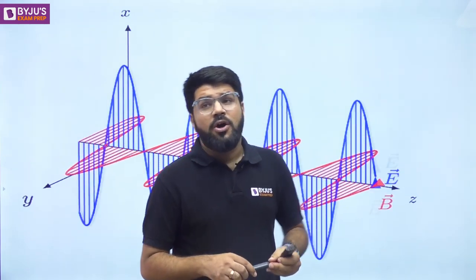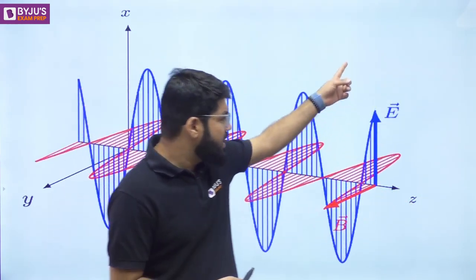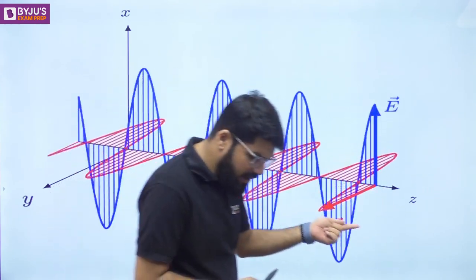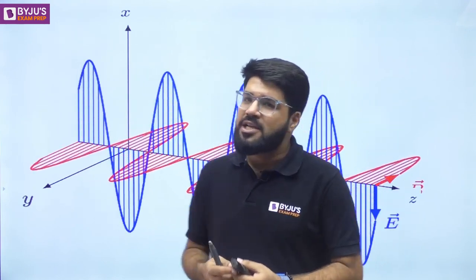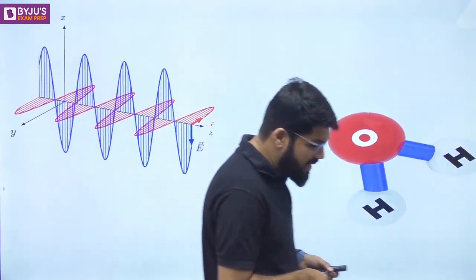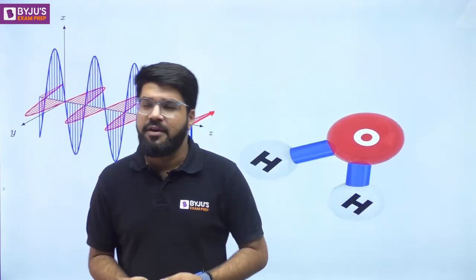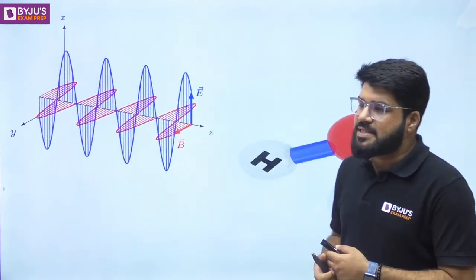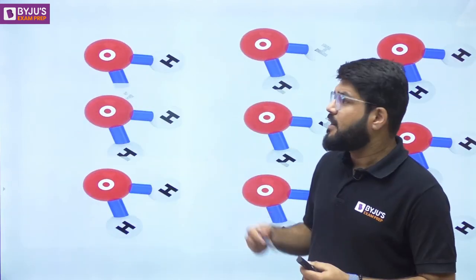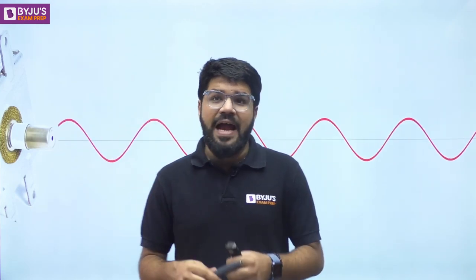Electromagnetic waves have both electric and magnetic fields oscillating perpendicular to the direction of propagation. Here we have a wave propagating in the z-direction, electric field oscillating along the x-axis, and magnetic field along the y-axis. Most food contains water molecules, which are polar in nature. When water molecules come in contact with the oscillating electric field, they tend to rotate due to the torque developed. When several water molecules oscillate simultaneously, they rub against each other, causing friction and generating the heat responsible for heating the food.